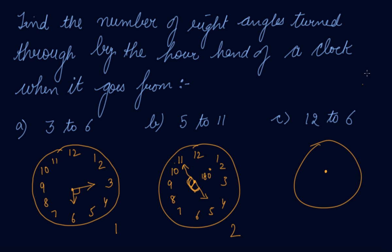When the hand turns from 12 to 9, it takes one 90-degree turn, then another, then another. So it has made three 90-degree angles — three right angles. You just have to look at the clock, revolve clockwise or anticlockwise as specified in the question, and count how many right angles are made.